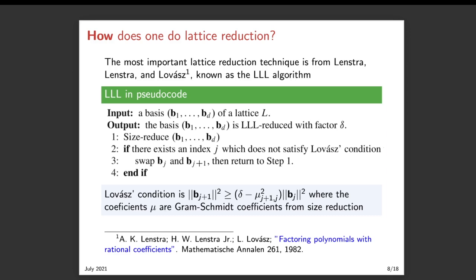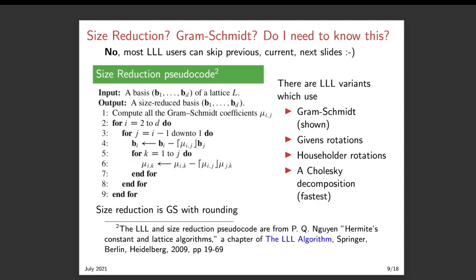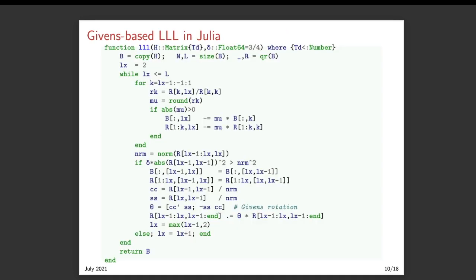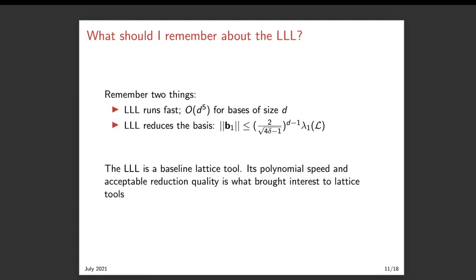Here is pseudocode for it. It calls a size reduction subroutine. Here is pseudocode for that subroutine. Unfortunately, we don't have a lot of time to spend on this. Or on this Julia code for a Givens-based LLL. Rather, we'll just tell you a couple things that you should remember about the LLL. And that is that it's fast and it does a pretty good job of reducing the bases.